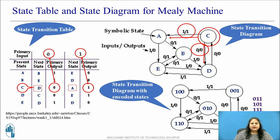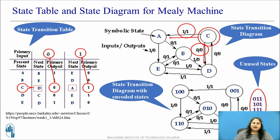The same state diagram can also be shown with the five states A, B, C, D, and E encoded using 3-bit binary numbers. Using 3 bits, a total of 8 combinations can be obtained, out of which 5 are assigned to these 5 states. The remaining 3 combinations are considered unused states. It is up to the designer to specify the next state if the system moves into one of these unused states. Most of the time in such situations, the next state will be the initial state or reset mode of the system. This is how the Mealy state machine is represented.